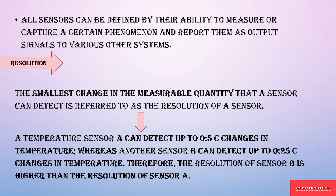For example, sensor A measures a change of 0.5 degree Celsius, while sensor B measures a change of 0.25 degree Celsius. Sensor B gives higher resolution because it can detect even a 0.25 variation, which is smaller than 0.5. So resolution is defined as the very smallest change that occurs in a measurable quantity that the sensor can detect.